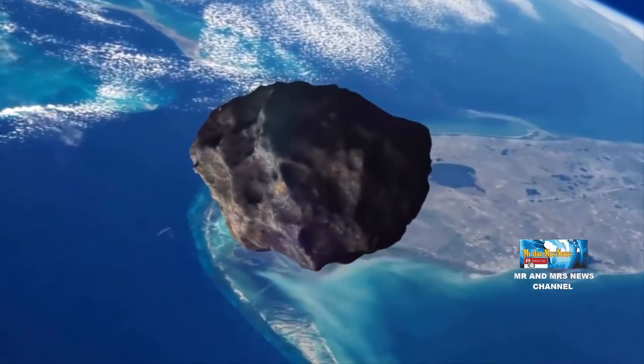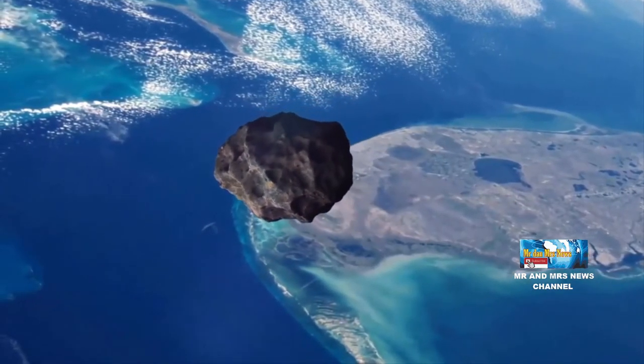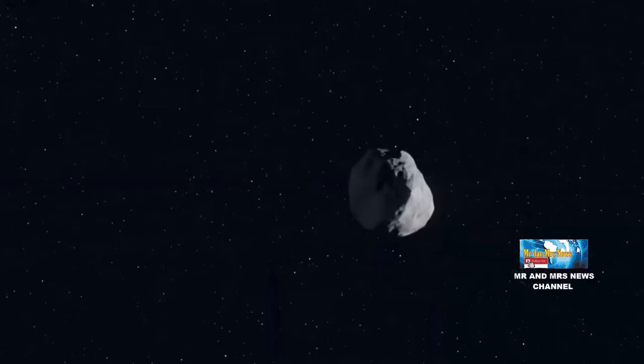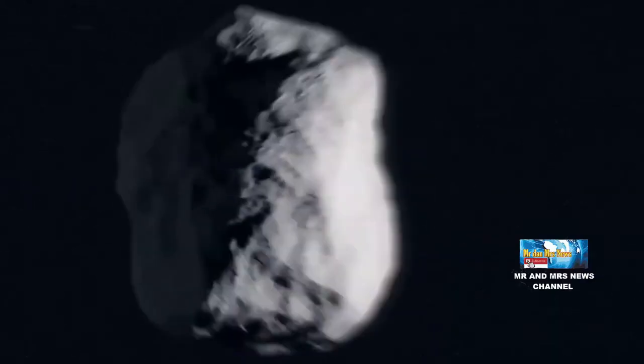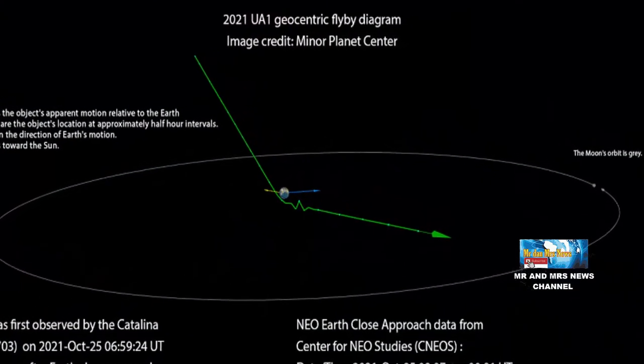Asteroid 2021 UA1 yang baru terdeteksi telah melewati bumi disebutkan memberikan informasi tambahan untuk para astronom dalam memantau lintasan asteroid. Hal ini disebut sangat bermanfaat untuk memberi hasil pantauannya lebih baik di masa depan.